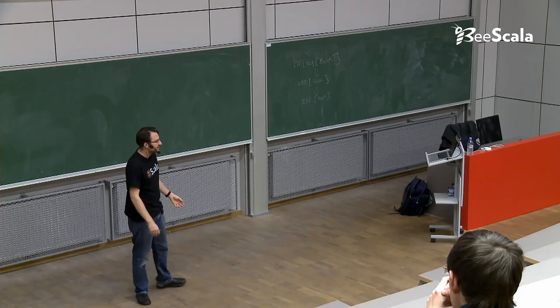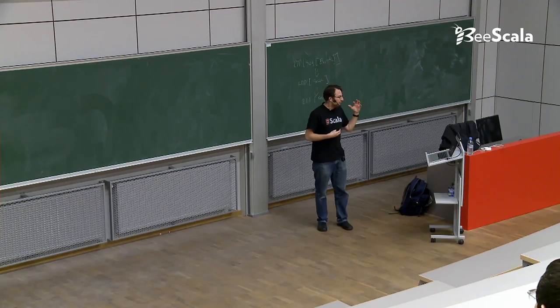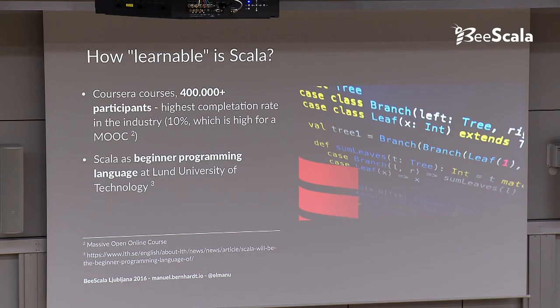Another example of Scala being actually easy to learn. There was a Coursera course, these are MOOC courses. It stands for Massive Open Online Courses. These are free courses. Really free. You can attend. You should be attending for five weeks or so in a row, do the exercises every day. This course, the first Scala course, had a completion rate of 10% with over 400,000 participants. It's the highest score in the industry for that.